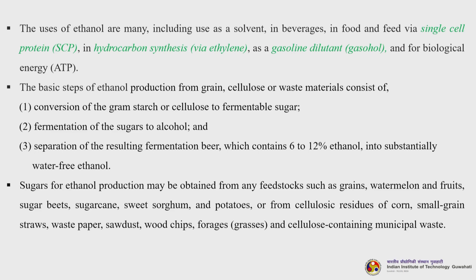The basic steps for ethanol production from grain, cellulose or waste materials consist of three steps: conversion of the grain starch or cellulose to fermentable sugar; fermentation of that sugar to alcohol; and separation of the resulting fermentation beer — which contains 6 to 12 percent ethanol — into substantially water-free ethanol. Sugars for ethanol production may be obtained from feedstocks such as grains, watermelon and fruits, sugar beets, sugarcane, sweet sorghum, potatoes, and from cellulosic residues of corn, small grain straws, waste paper, sawdust, wood chips, grasses, and cellulose-containing municipal waste.